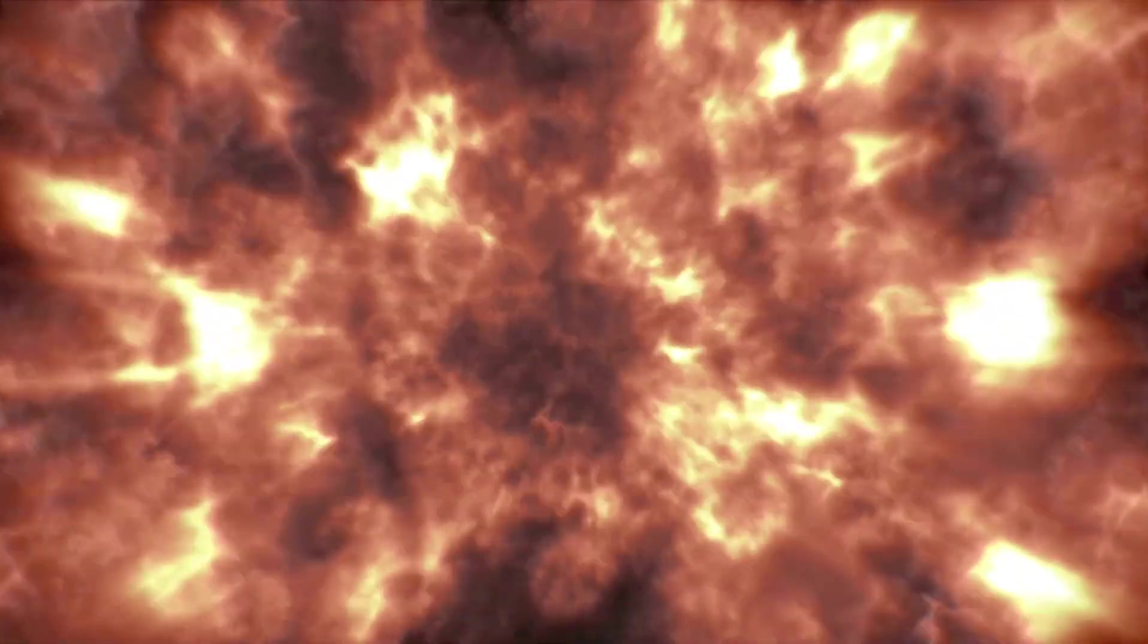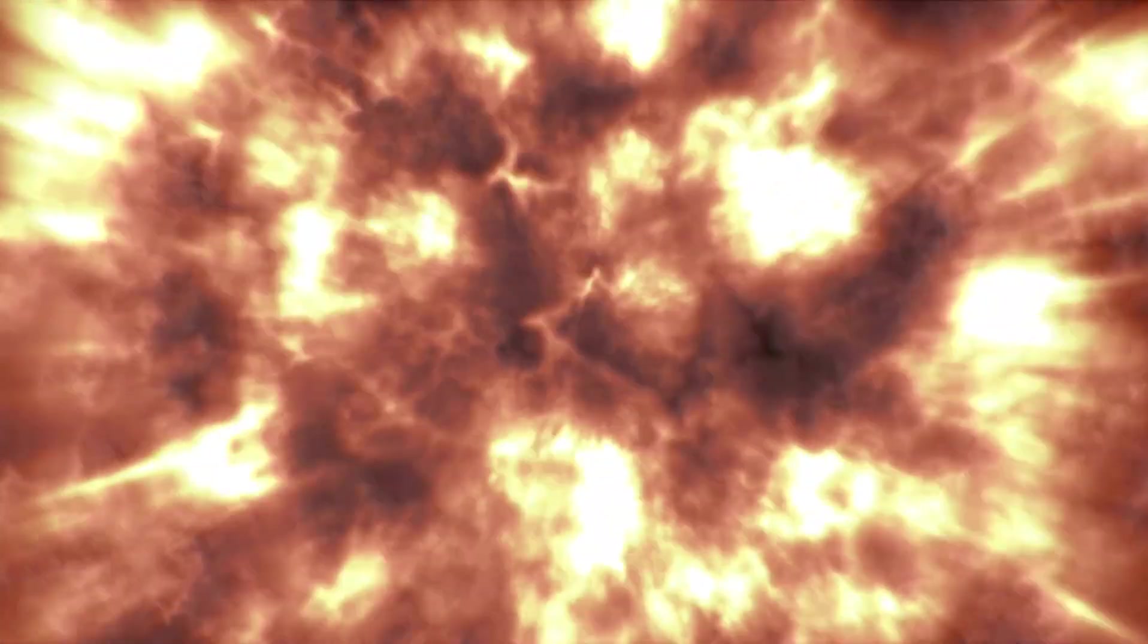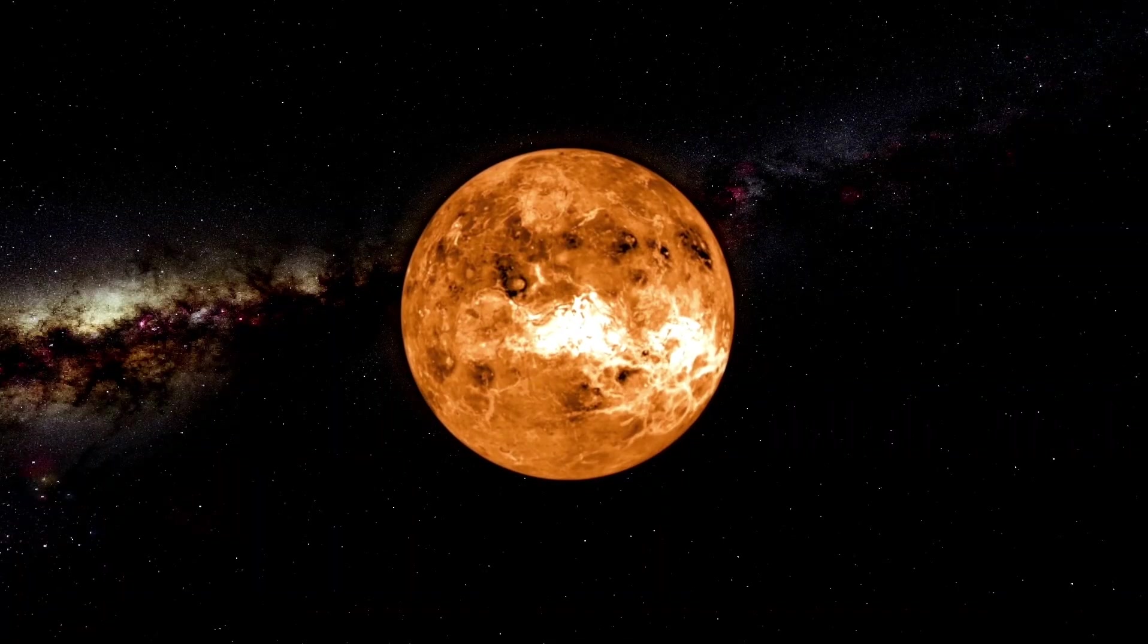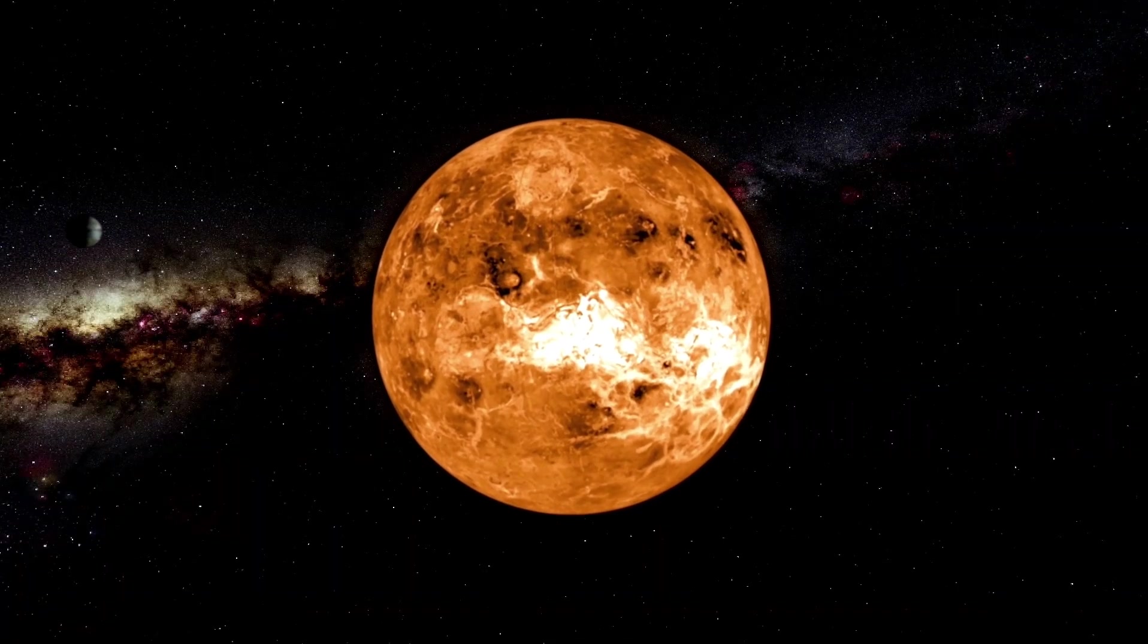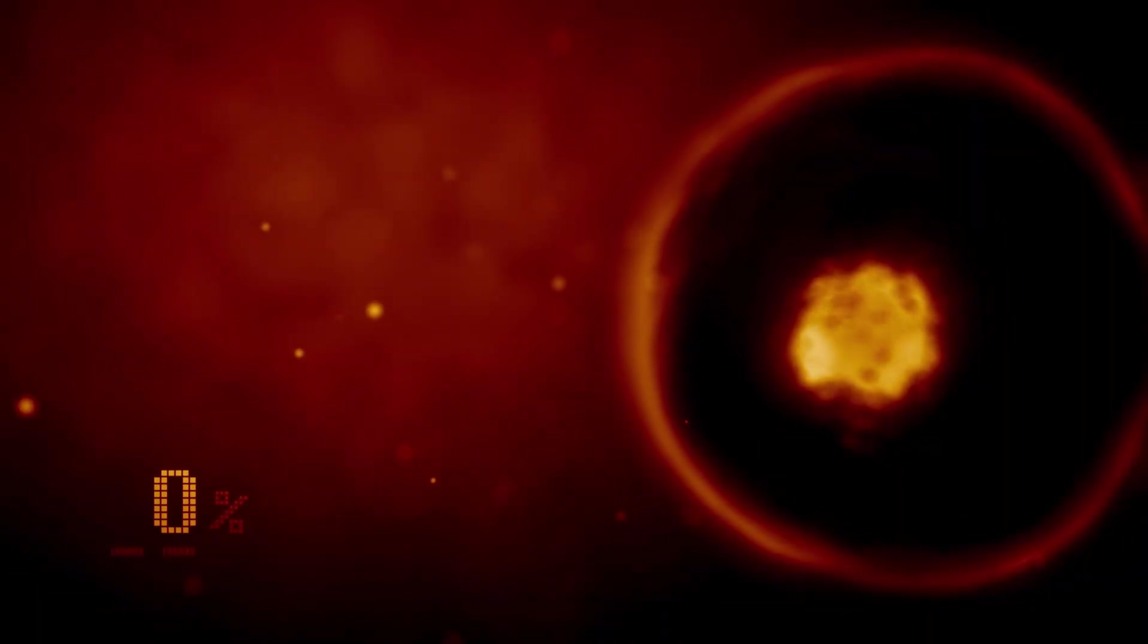When a star nearing the end of its life is surrounded by a substantial disk of material, a specific kind of supernova arises. A shock wave is generated after the initial explosion of the supernova and strikes that disk. This shock wave causes the disk to become extremely hot, which in turn leads the disk to generate a large amount of X-ray radiation. This radiation has a high energy density and a very long travel range.